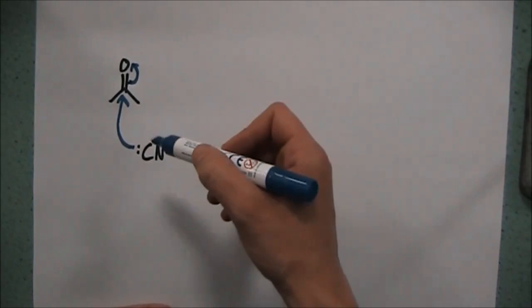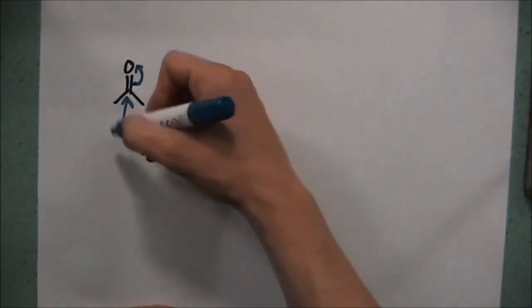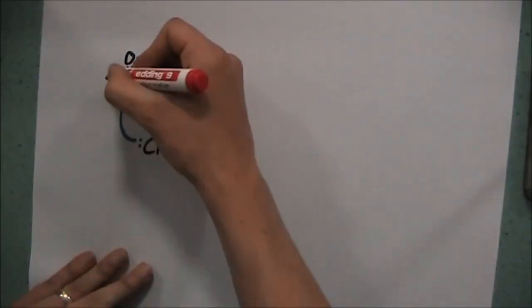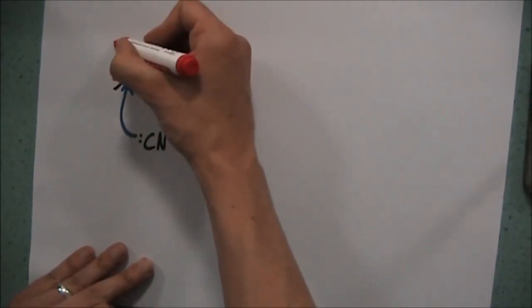So we're going to take our cyanide ion. The carbon with the lone pair is going onto here. Why is it going onto there? Because we have a delta plus. And then this is going to push up towards the delta minus. Don't forget to show your dipoles. I almost did.